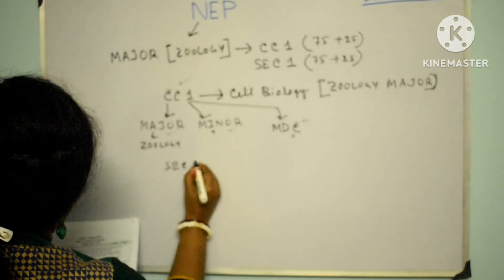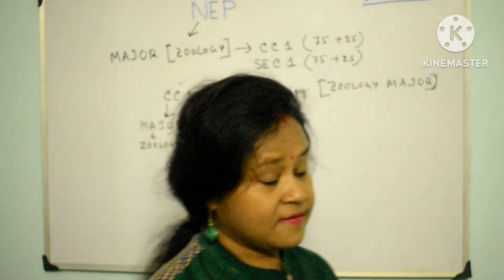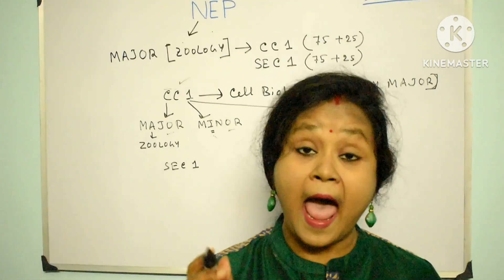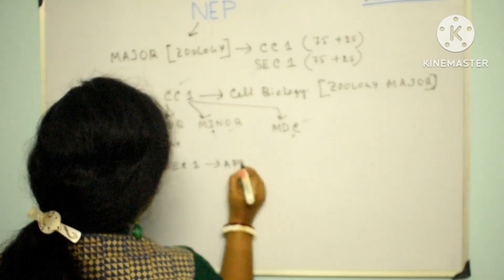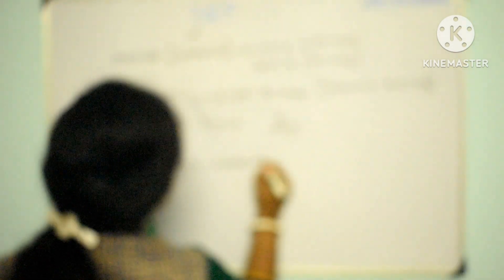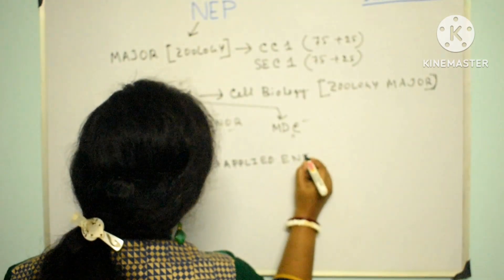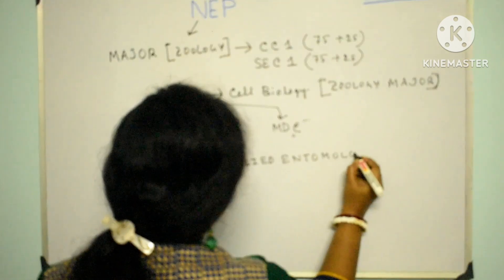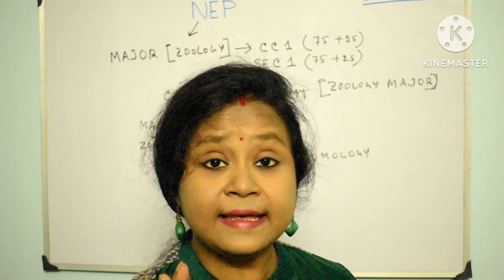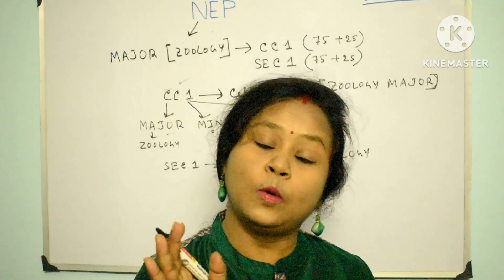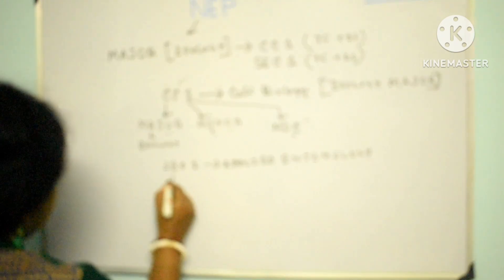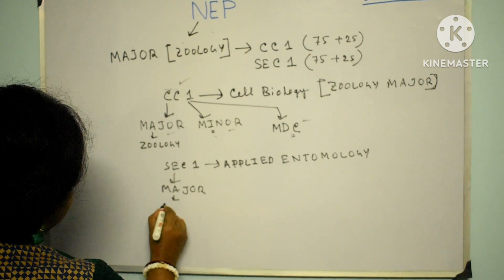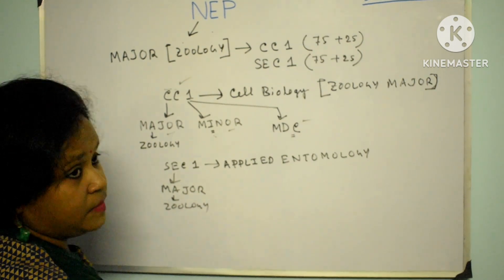The next category of students going to study CC1 are MDC — Multidisciplinary Course students, generally the Bio General students. They are general students, not from major. So three categories study CC1: Major in Zoology, Minor students, and MDC (general students). SEC1 under semester 1 is about Applied Entomology, and this Skill Enhancement Course is only for Major Zoology students.